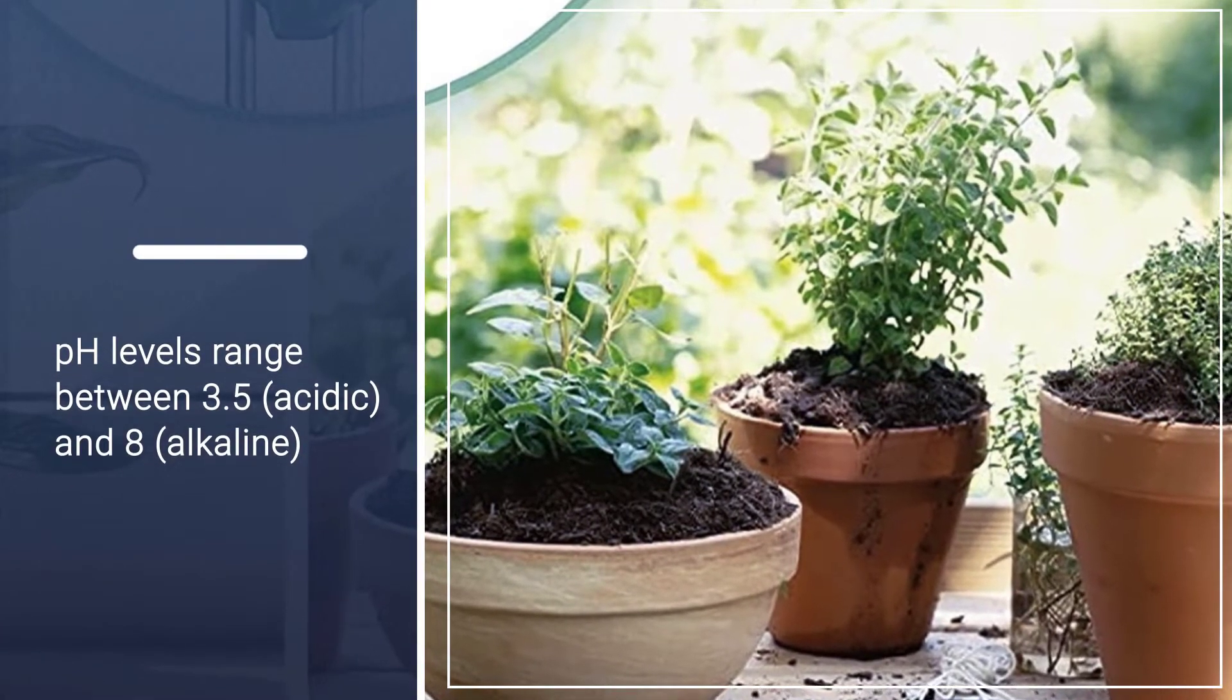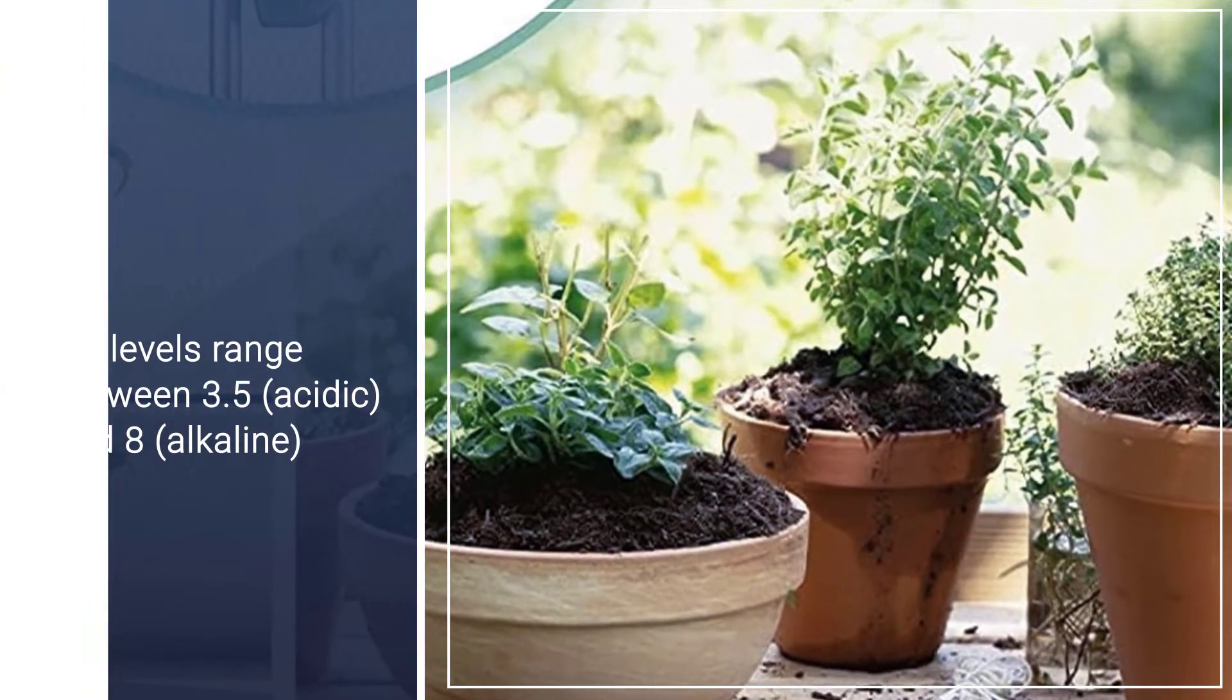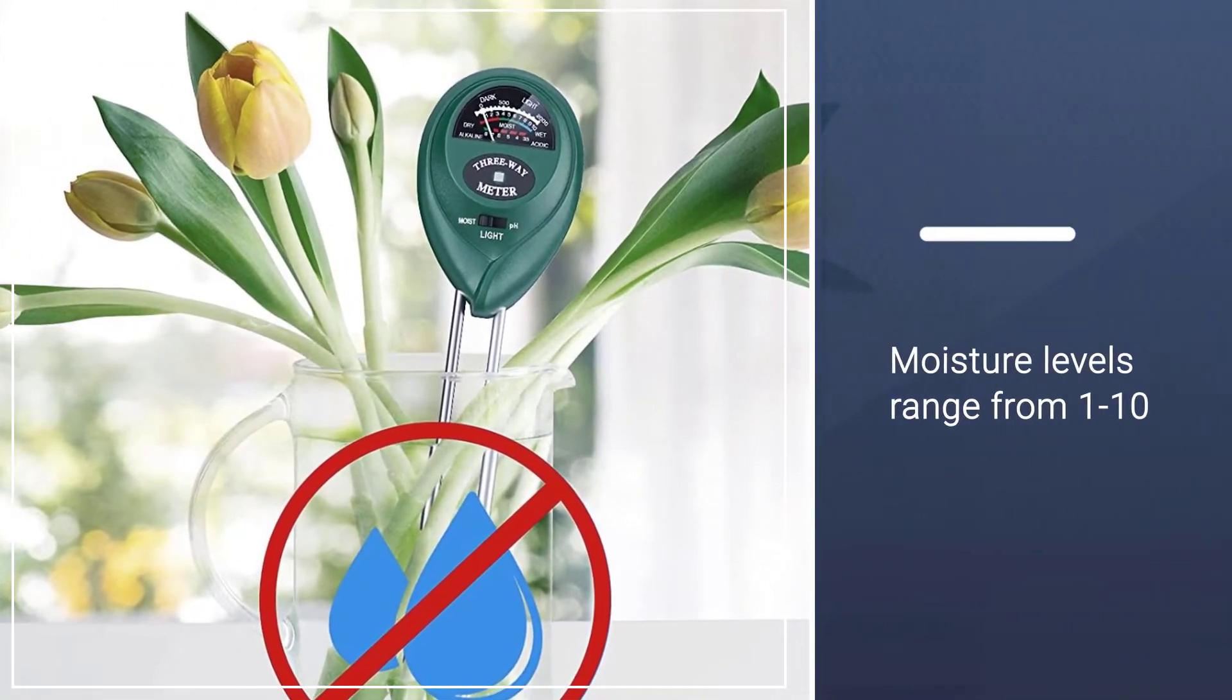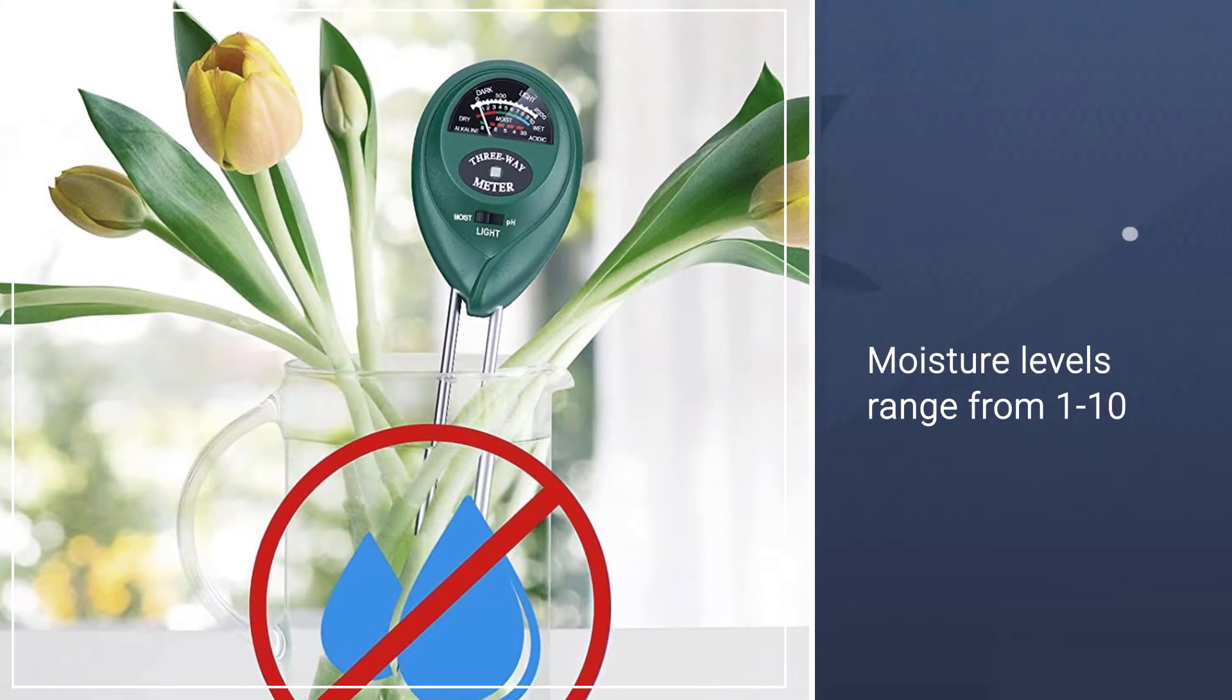Light temperature readings range from dark to light and 0 to 2000 lux, so you can easily gauge the changing light patterns in your garden.